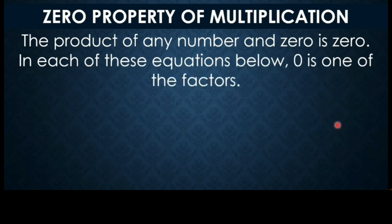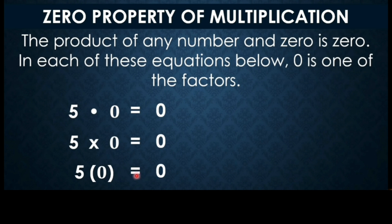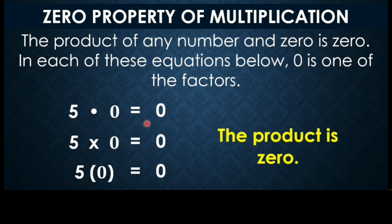The last property is the zero property of multiplication. The product of any number and 0 is always 0. In each equation, 0 is one of the factors. For example, 5 times 0 equals 0. When you multiply 0 by any number, the result will always be 0 — that is the zero property of multiplication.